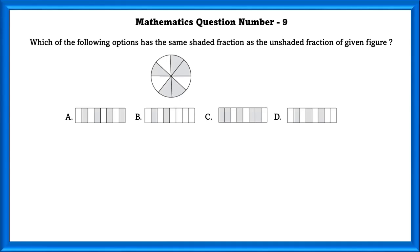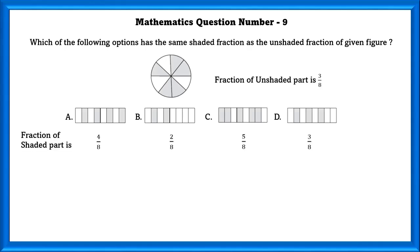Mathematics question number 9. Which of the following options has the same shaded fraction as the unshaded fraction of the given figure? The unshaded fraction of the given figure is 3 by 8. In option D, 3 parts are shaded out of 8 parts, which is the same as the unshaded part of the given figure. So option D is the correct answer.